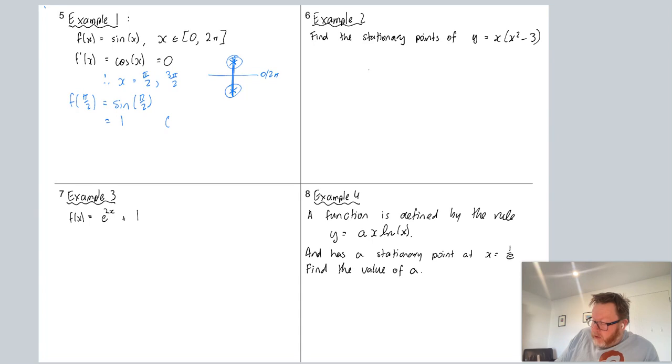Then we have f(3π/2), and that would be the sin(3π/2). 3π/2 would be here, negative one. So our second coordinate pair is 3π/2, -1. That's basically it. We've got our two stationary points.